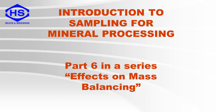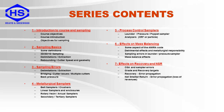Welcome to the sixth part of the presentation series, Introduction to Sampling for Mineral Processing. In the previous videos we looked more at the specifics of sampling and samplers. In this video and the next one we will look at the potential effects of incorrect or poor sampling — specifically the effects of sampling errors on mass balancing, which will include aspects of the AMIRA code, detrimental effects and metallurgist responsibilities, sampling errors in launder and pressure samplers, and mass balance effects.